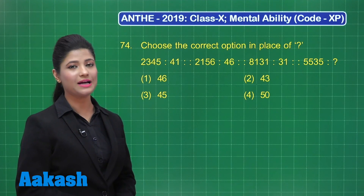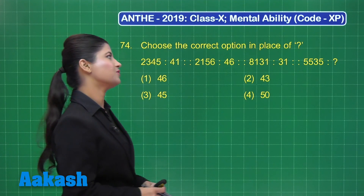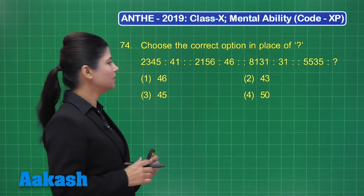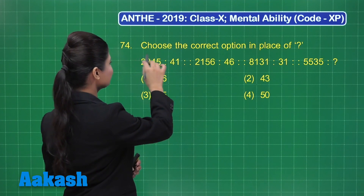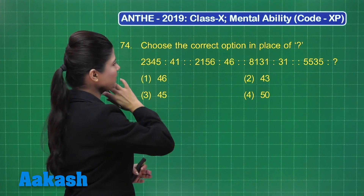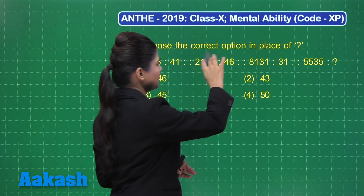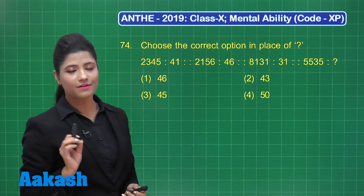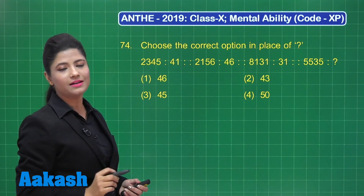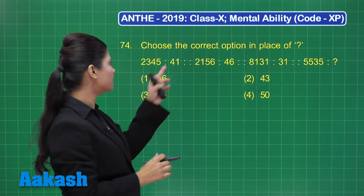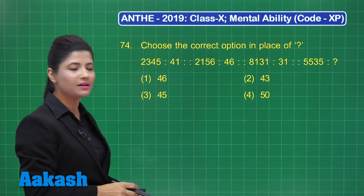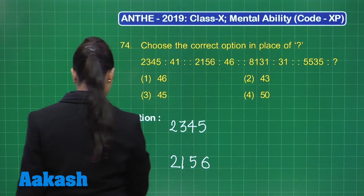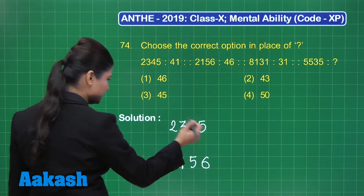Let's discuss question number 74. It states: choose the correct option in place of the question mark. This is a number analogy where we have the relationship between the number 2345 and 41. A similar relationship is present in the other pairs as well. First, let's try to identify the pattern and the coding being used to obtain 41 from the first number 2345.